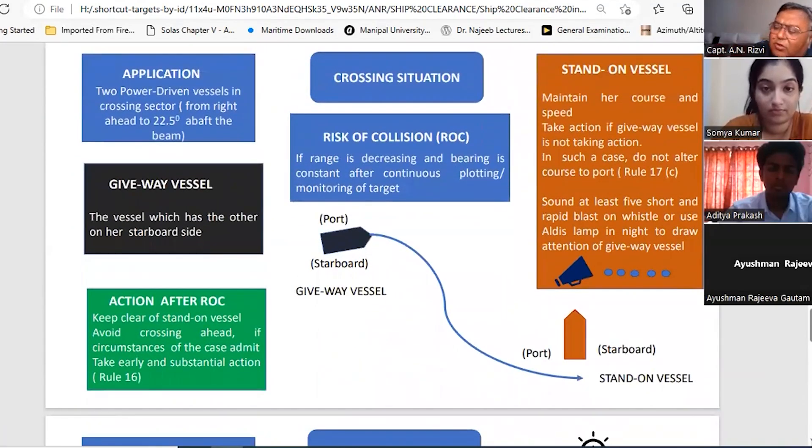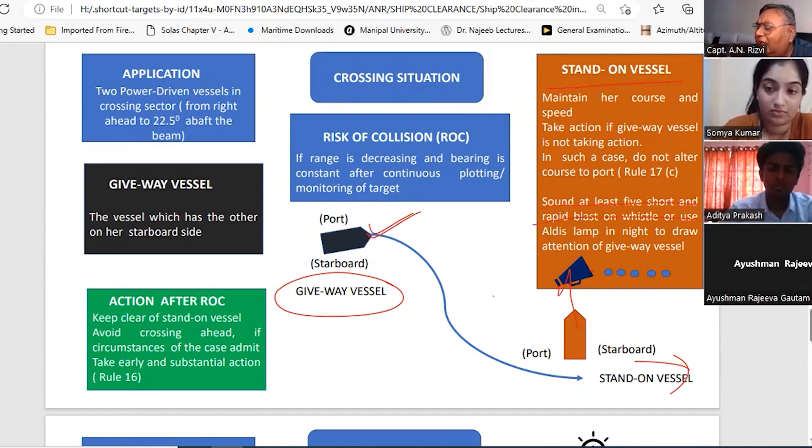Then the crossing situation. Again for us, the crossing situation is also applicable to 2 power-driven vessels. And that is when you are coming at 22.5 degrees. So one vessel is give-way - the vessel which has the other on the starboard side is give-way. The other vessel is stand-on. Give-way vessel, what you have to do - you have to determine risk of collision. If there is risk of collision, avoid crossing ahead. 1 short blast, alter course to starboard, and avoid crossing ahead. The stand-on vessel is supposed to maintain course and speed. And if the give-way vessel is not taking action, then you are supposed to take action. First action is sound at least 5 short rapid blasts, and if still this guy doesn't listen, 1 short blast, alter course to starboard, pass stern of it.